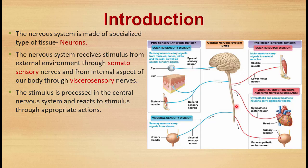The central nervous system processes information. It receives general sensations from the skin, as well as special sensations from special sensory organs — for example, the eye, the ear, the tongue, and the nose.